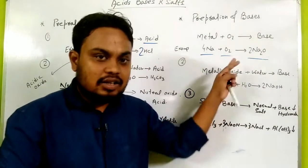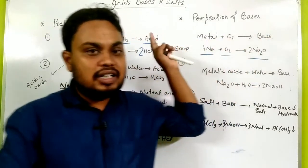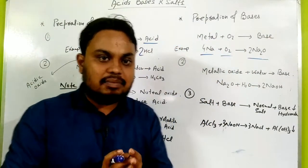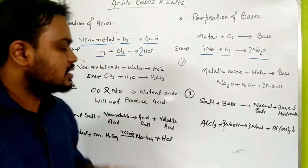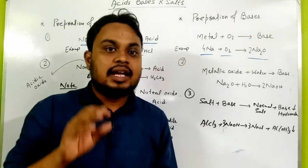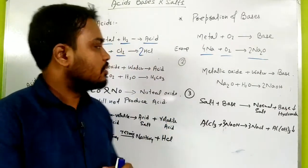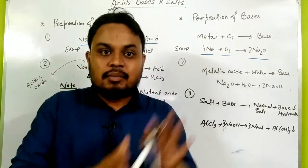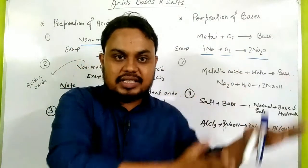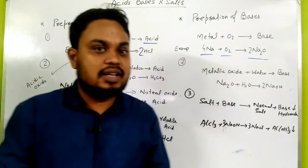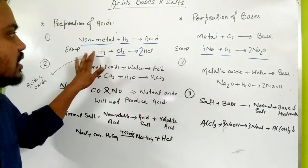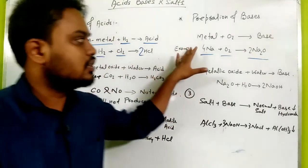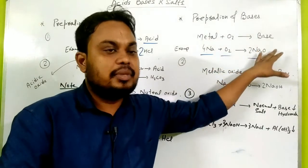So metal oxide is basic in nature, and non-metal oxide is acidic in nature. That clears the first preparation. Acid preparation: when non-metal reacts with hydrogen, it forms acid. Base preparation: when metal reacts with oxygen, it forms base. We have also seen examples of this.